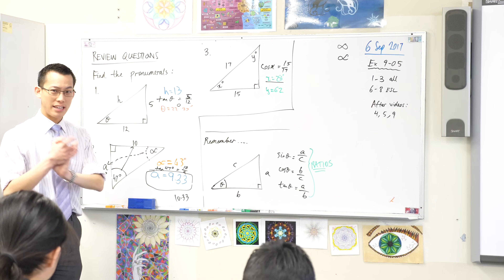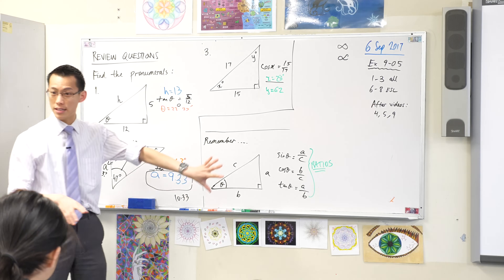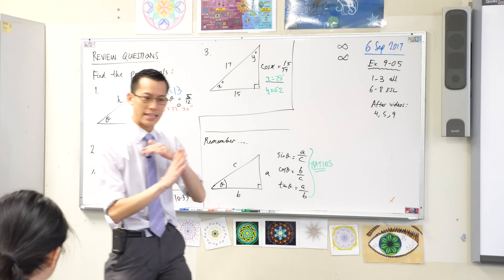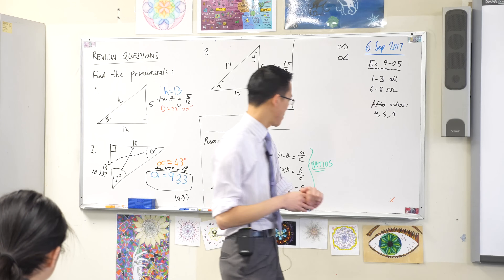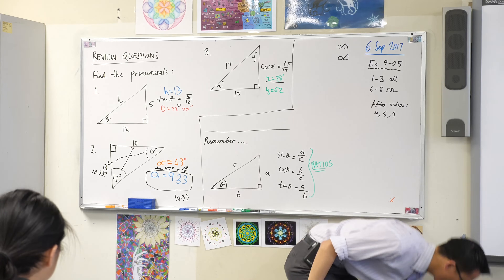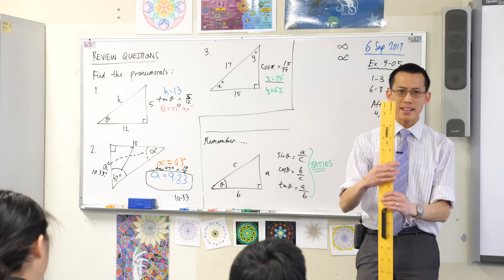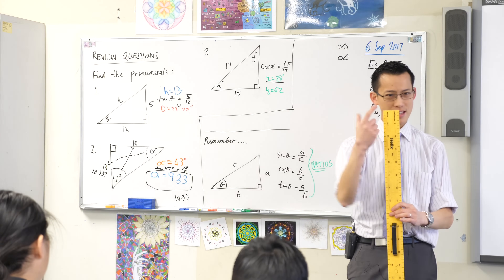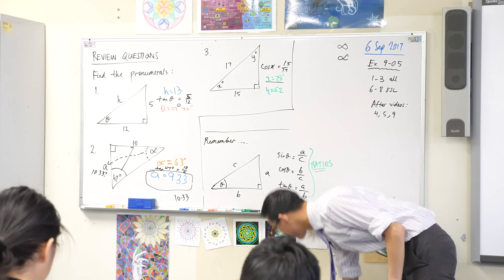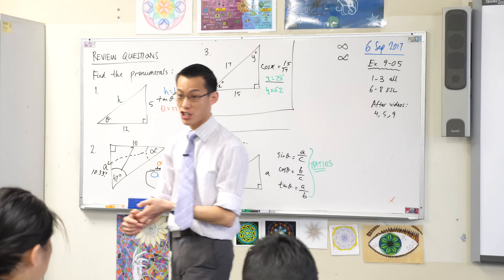To illustrate that, what I want you to do is underneath this triangle, draw a nice big Cartesian plane — maybe 10 centimetres high, 10 centimetres across, so 10 by 10. Draw me a nice Cartesian plane.